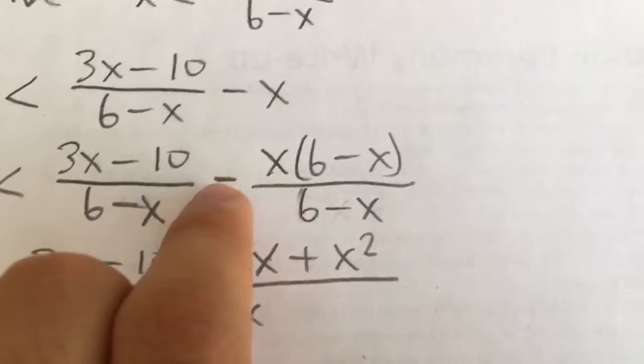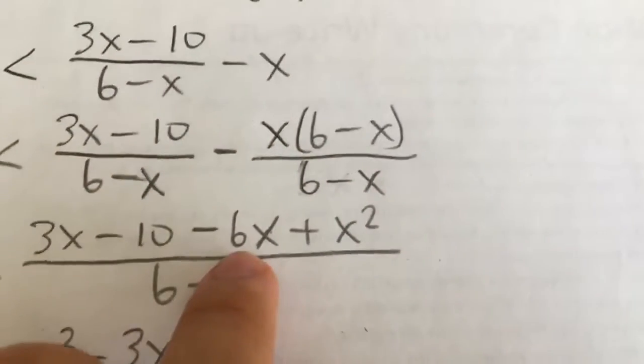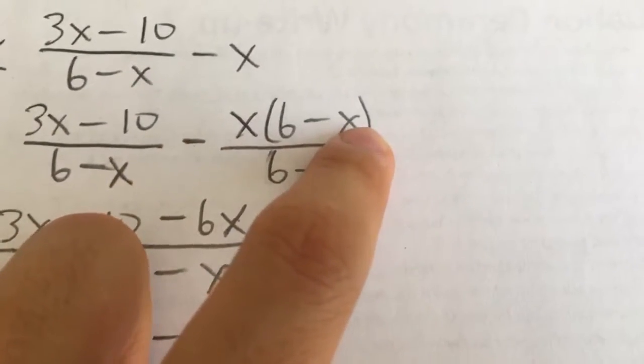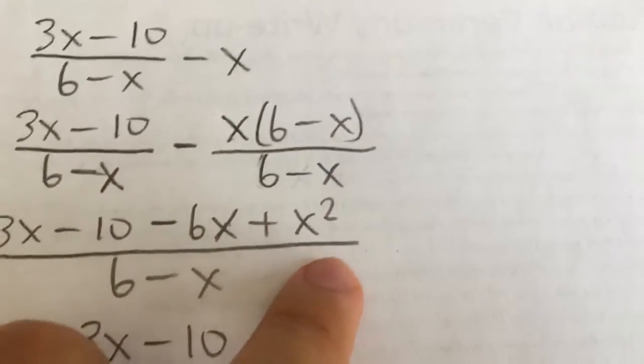So here I have negative x times 6, negative 6x. And negative x times negative x. So that's plus x squared.